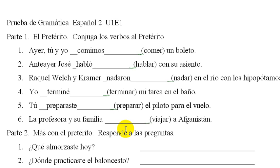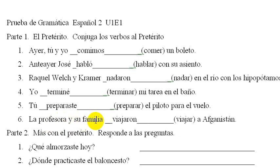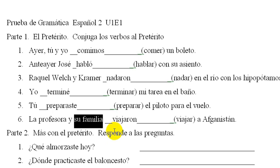Y seis, la profesora y su familia viajaron a Afghanistan. I just want to point out one other thing that people often get wrong. If this sentence just said su familia — his or her family — the verb would be in the he/she singular form, because the family is one unit. So if I wanted to say my family goes to the beach, I'd say mi familia va a la playa, not van, because family is singular. If this was just family, this would be viajó, by the way.